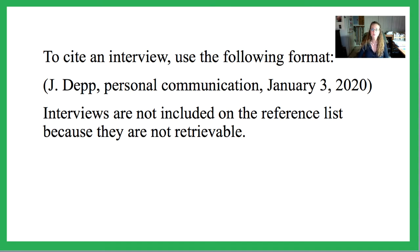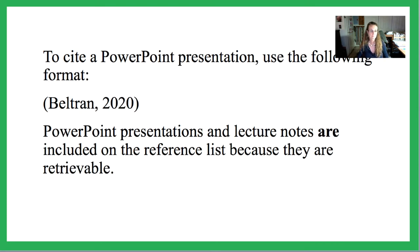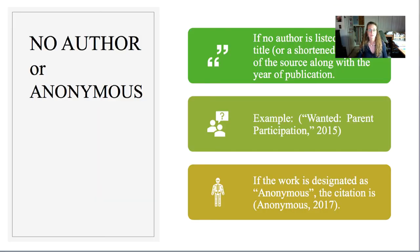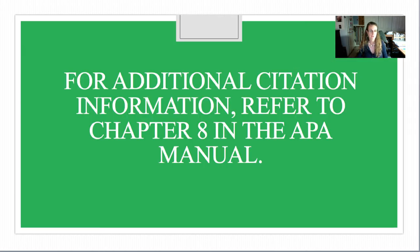If you're doing an interview, you would just say 'personal communication' and the date, and this would not show up in the reference list because it's not retrievable. But if you were going to cite something like a PowerPoint from a class, you would put the author and year and include it in the reference list because it is retrievable. If there's no author or it's anonymous, you might say 'anonymous,' or for the author put the title of the source first. For additional citation information, you can refer to the textbook.